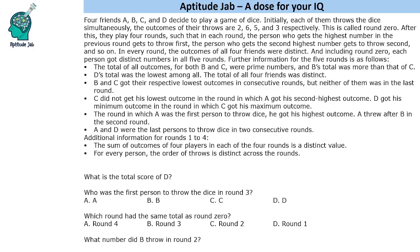Hello everyone, welcome to Attitude Jab. This set says that there are 4 friends who play a game of dice and they started with the numbers 2, 6, 5, 3 — this is called round 0. After this they play 4 rounds, so total 5 rounds including round 0. In each round, the person who gets the highest number in the previous round gets to throw first. The person with the second highest gets to throw second, and so on — the order is descending order of the previous throw.